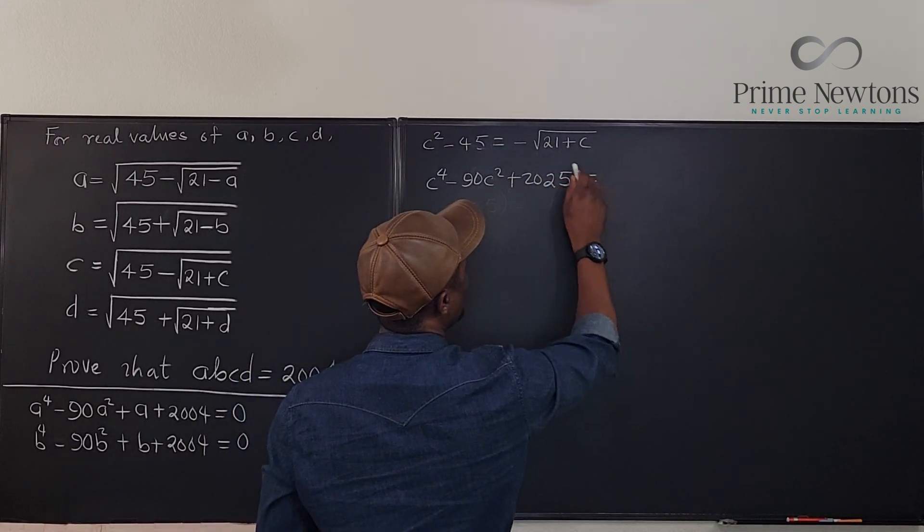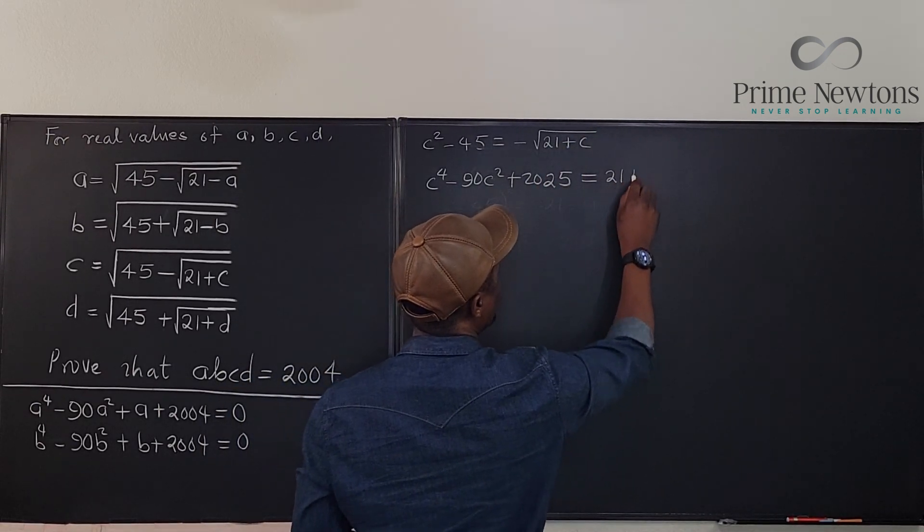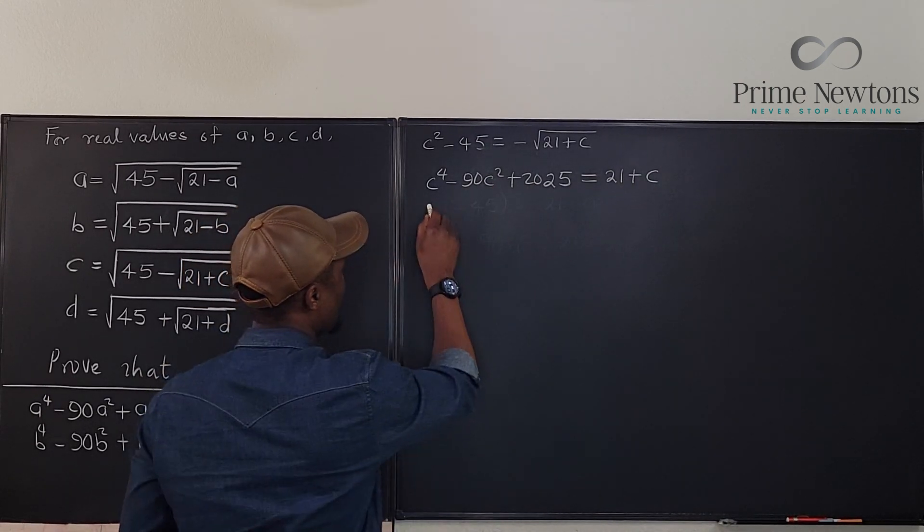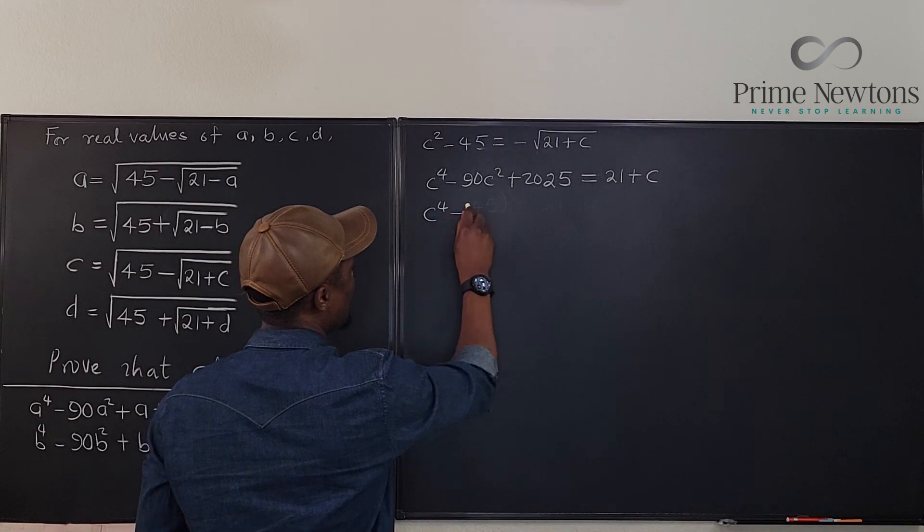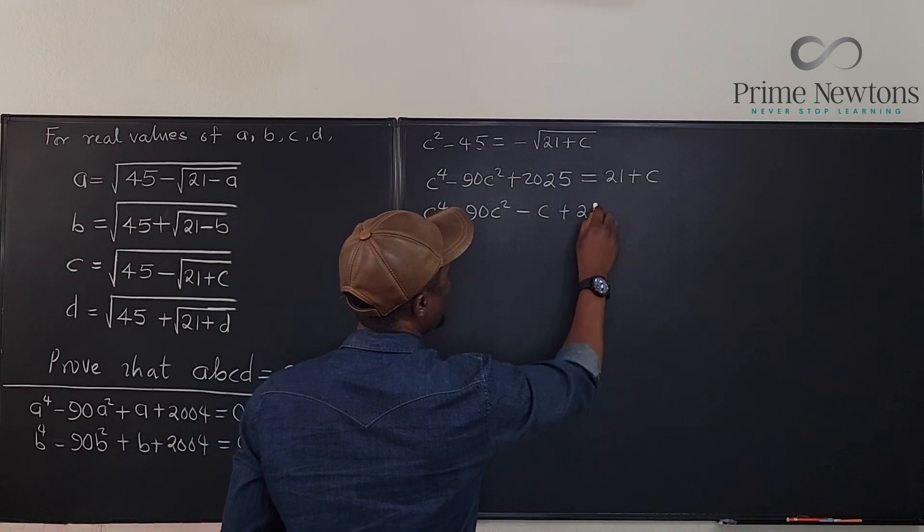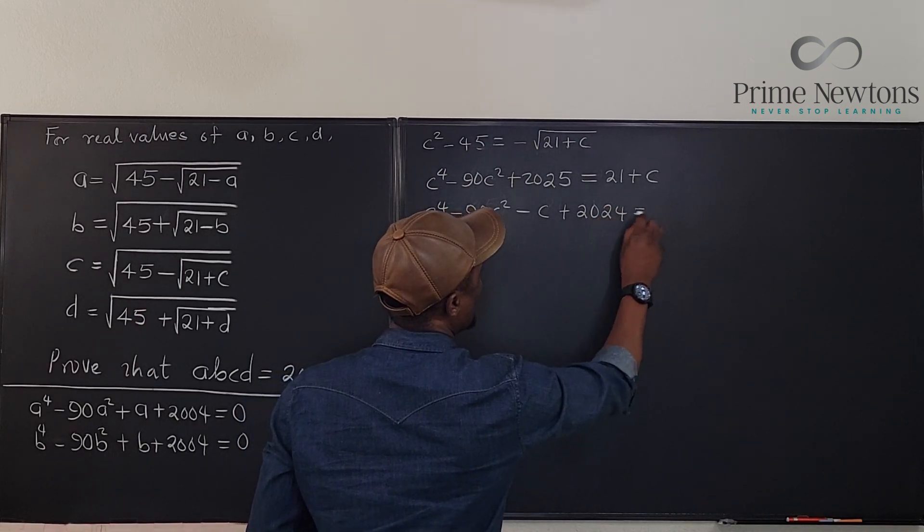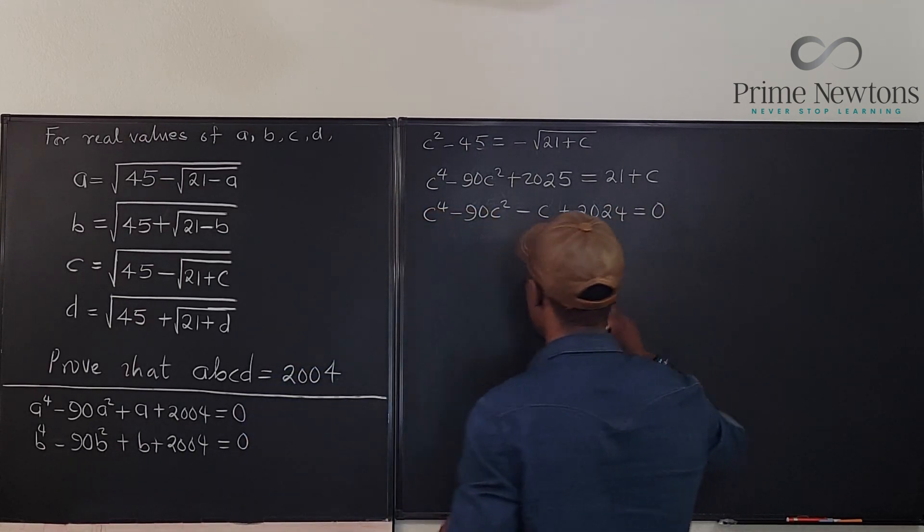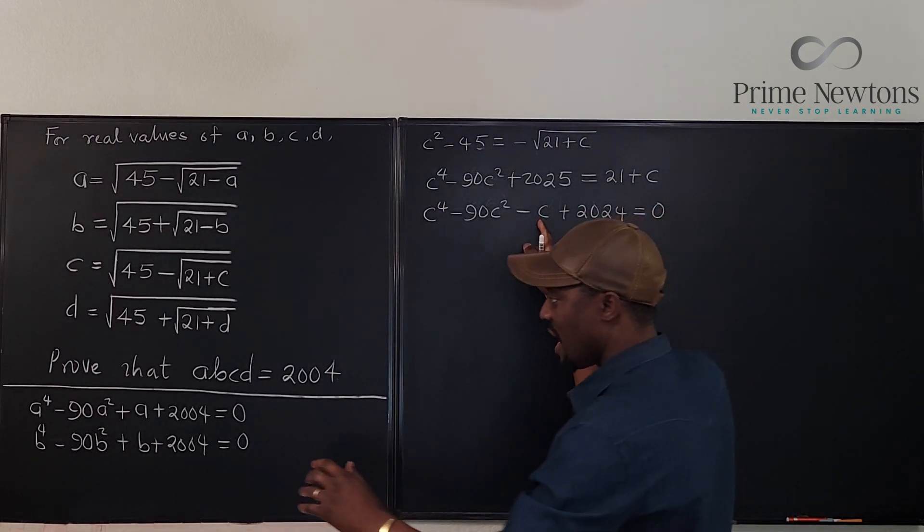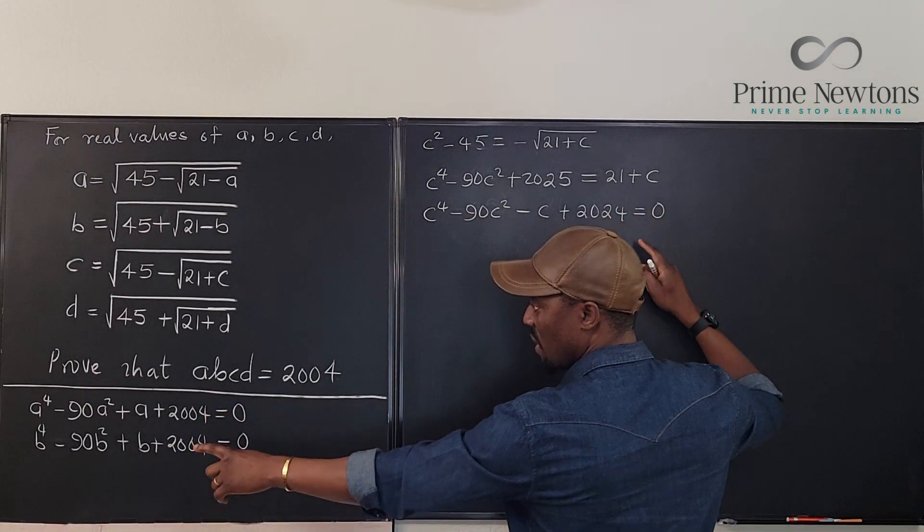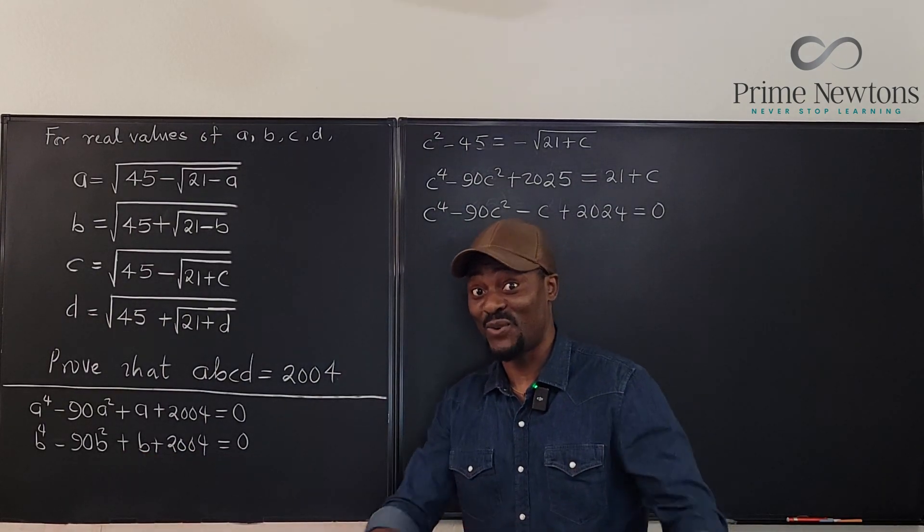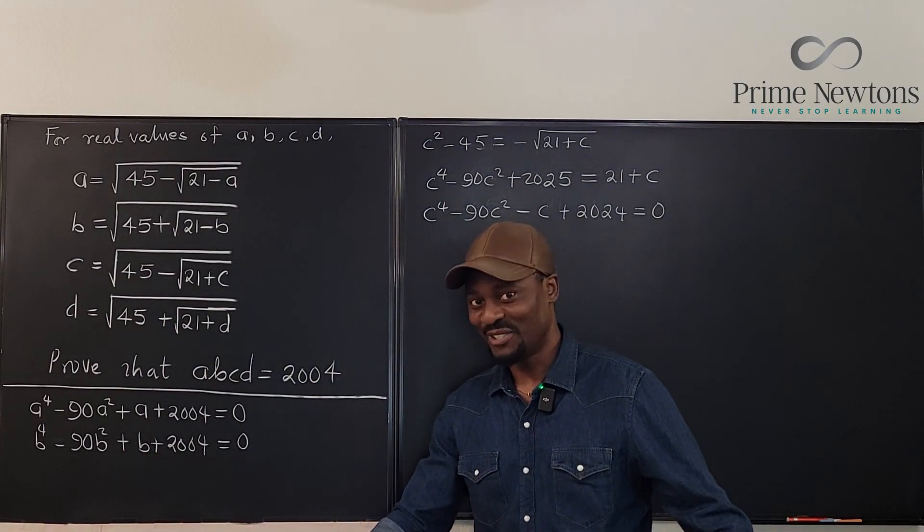will be equal to this would be square. This is just going to be 21 plus C. So that means if we bring everything together, we get C to the fourth minus 90 C squared minus C plus 2024 is equal to zero. Okay, now I just want to see. This now has a negative. See, everything else is the same as what we had before. It's just that instead of this being a plus, and that was where I got stuck for a long time until Pranil showed up.